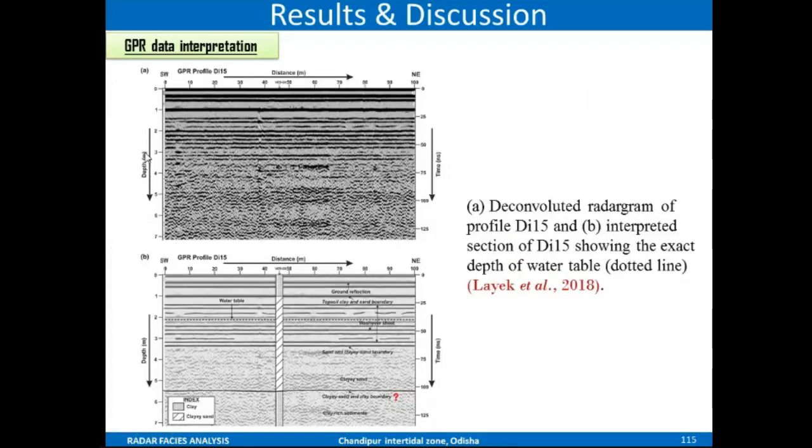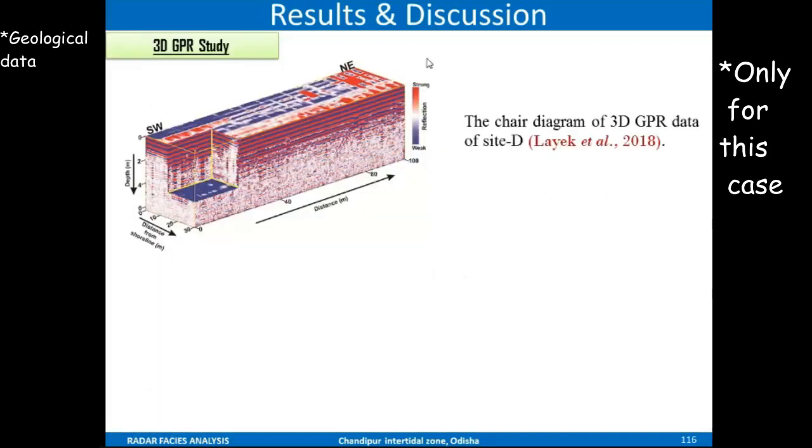Here I have used vertical electrical sounding and GPR data. You can see the water table reflection is identified clearly. The river is there - this is the northeastern side. You can see the soil cover is changing from this side to this side.